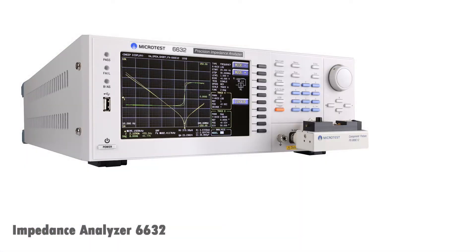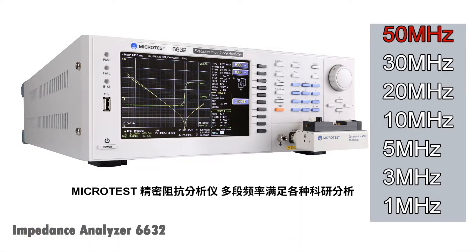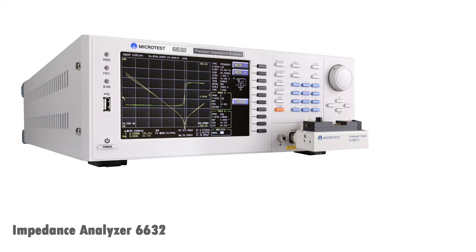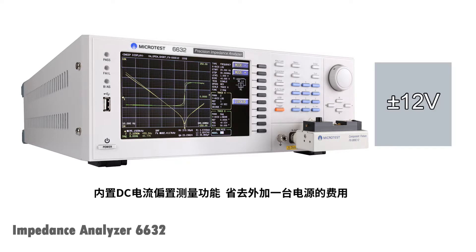The Precision Impedance Analyzer Microtest 6632 has 7 frequency options and a built-in DC bias voltage function.